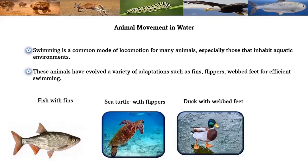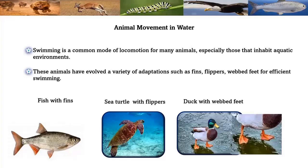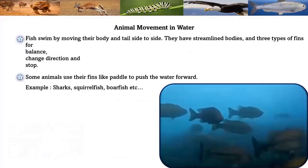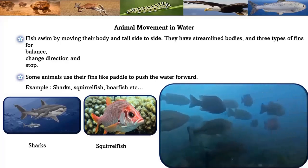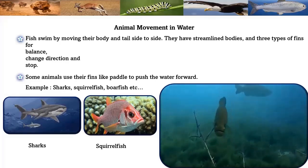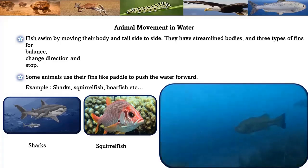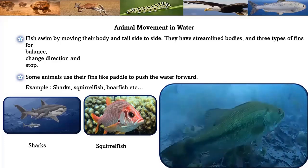Animal movement in water: swimming is a common mode of locomotion for many animals, especially those in aquatic environments. These animals have evolved adaptations such as fins, flippers, and webbed feet for efficient swimming. Fish swim by moving their body and tail side to side. They have streamlined bodies and three types of fins for balance, changing direction, and stopping. Some animals use their fins like paddles to push water. Examples include sharks, squirrelfish, and boarfish.